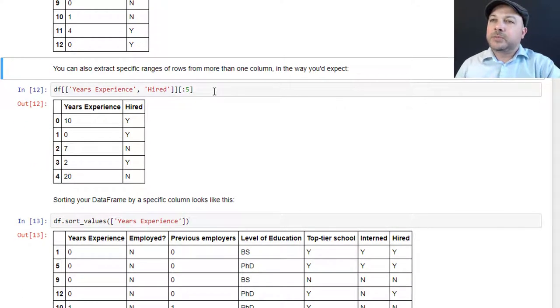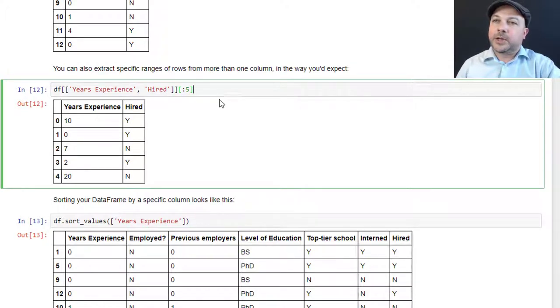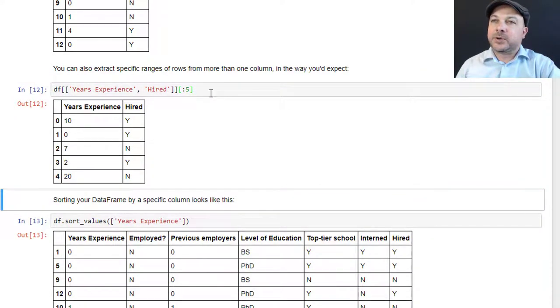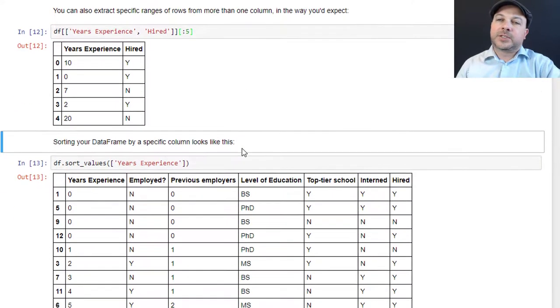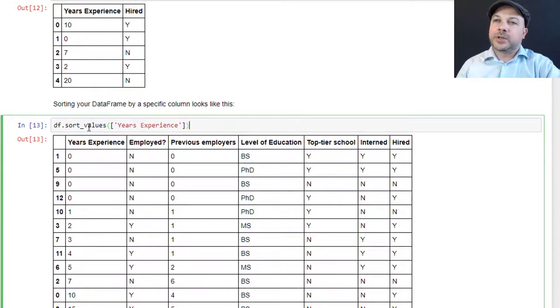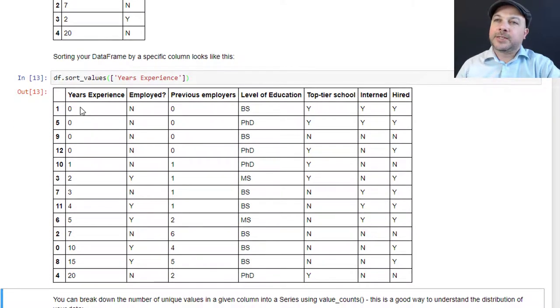You can also extract ranges of rows from more than one column in the same way. I could say I want just the first five rows of the years experience and hired columns. If you want to sort your results, sort your data frame, you can do it like this. There's the sort_values function you can call on a data frame. Just pass in an array of the column that you want to sort by. We'll say 'Years Experience', do you want to sort by years experience? And you can see it did in fact do that, sorted from lowest to highest, zero up to 20 years of experience in our little fabricated data frame here.